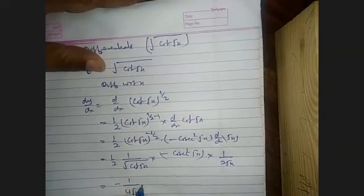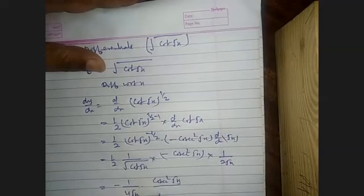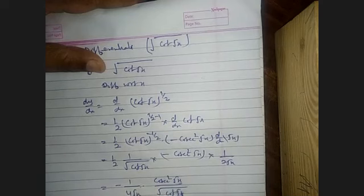So the final answer is −cosec²(√x) upon 4√x · √(cot(√x)).